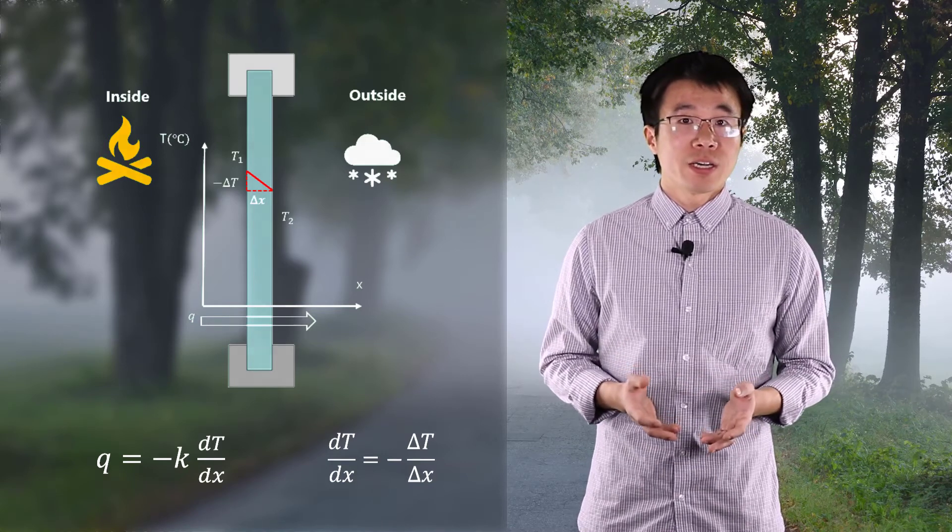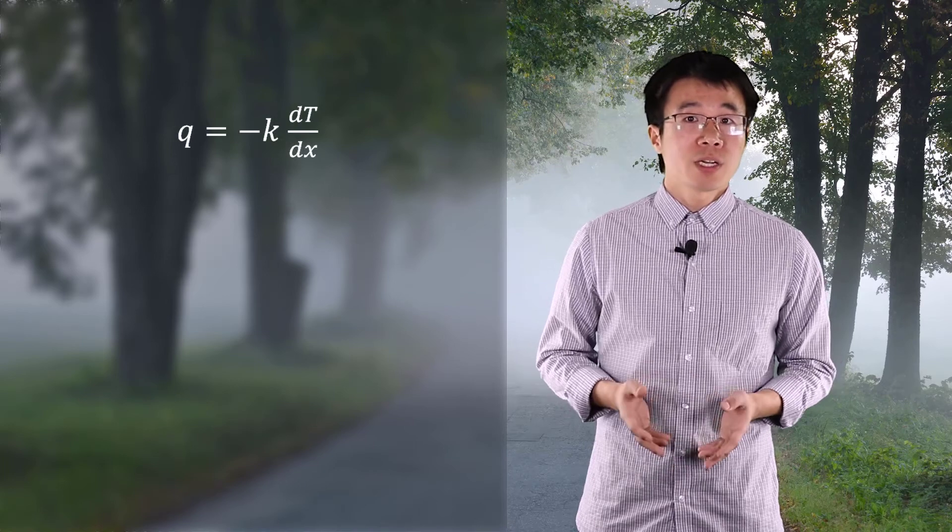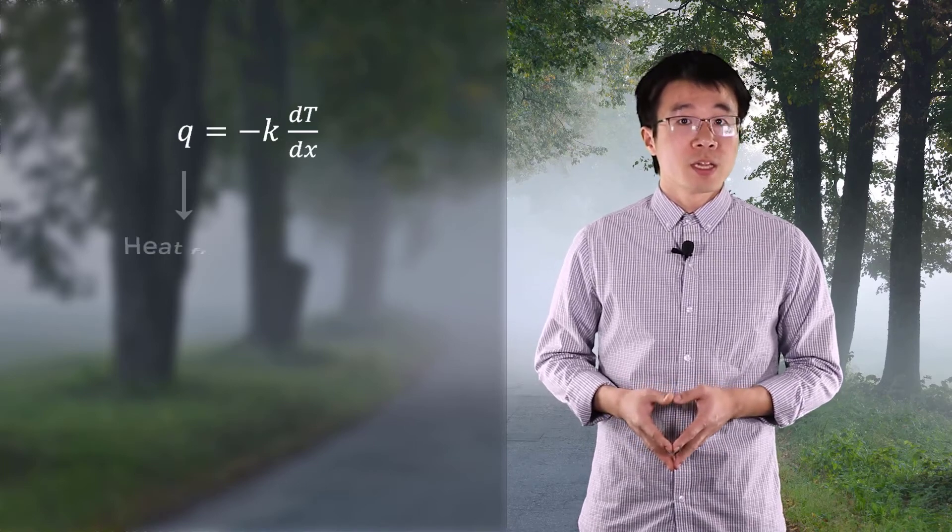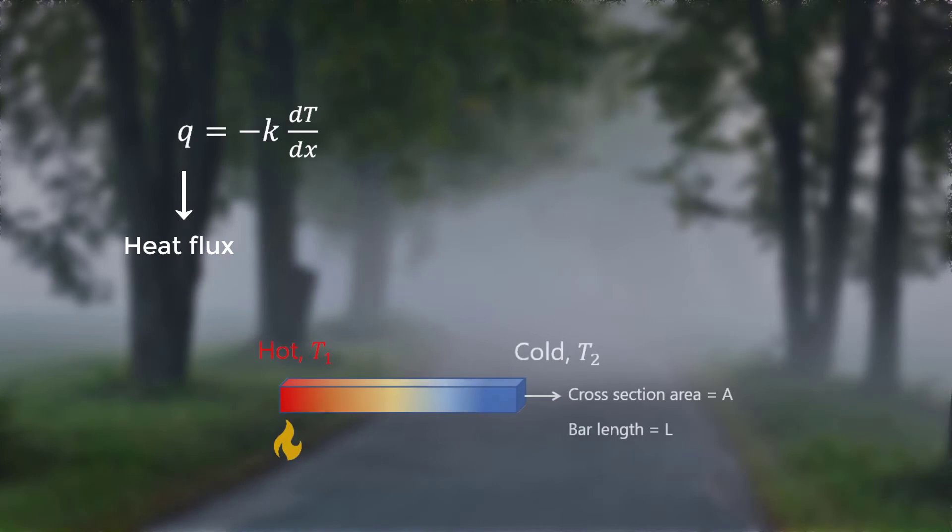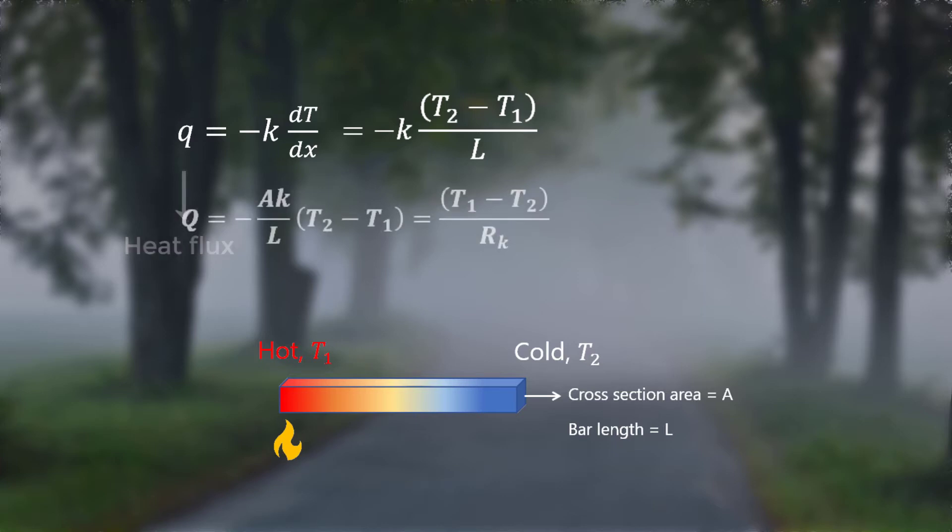Since the current Fourier's law is expressed as a function of heat flux, how does it relate to heat flow rate? Take this bar for example. The left side has a higher temperature T1, and the right side has a lower temperature T2. The cross-section A is uniform along the length L. Assuming the temperature changes linearly along the bar, then the temperature gradient can be replaced by T2 minus T1 divided by L. So we can express Fourier's law with respect to heat flow rate.